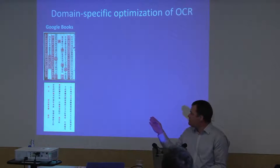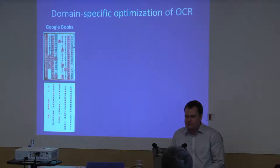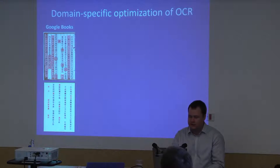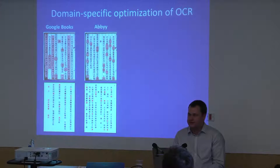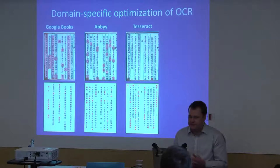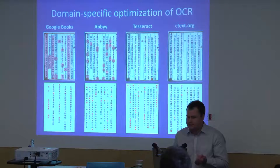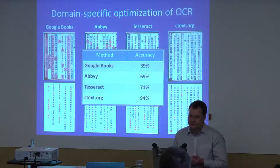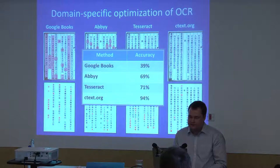Whenever I talk about OCR people always ask about accuracy, and I don't want to just give a number without context. So here is a very brief comparison on one particular page image from Google Books. I've highlighted all inaccuracies: on the top are things not transcribed, on the bottom are things mistranscribed. If you put this into other OCR systems, Abby Fine Reader and Tesseract are clearly better than Google Books, and this is the ctext procedure result for the same page. The accuracy goes from something like 40% in Google Books, to about 70% for off-the-shelf OCR, and 94% for ctext — a tenfold reduction in error rate from 60% to 6%.